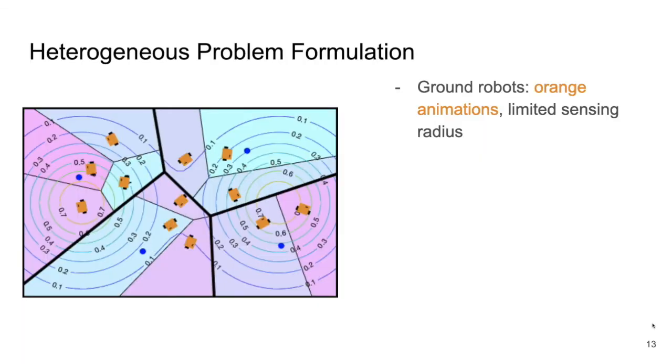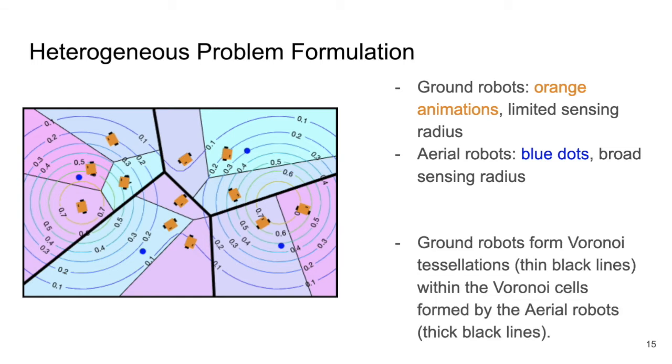Now I will discuss our heterogeneous team formulation. We have two types of robots. Ground robots, with range-limited but fine sensing capabilities, denoted by the orange animations, and aerial robots, with relatively broad but coarse sensing capabilities, denoted by the blue dots. The Voronoi partitions are slightly different than in traditional coverage control. The aerial robots form Voronoi partitions which are in thick black lines, and then the ground robots form Voronoi partitions within the aerial partition, as shown with the thin black lines.